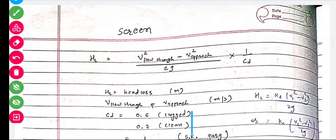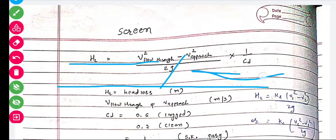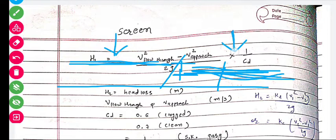This is the head loss formula. What is head loss? Here is the screen chamber - upstream of the screen the water depth will be higher, and downstream the water depth will be lower. There is some loss in head, or in simple words a decrease in depth. You can see some depth decrease in the downstream of the screen. This decrease in depth is called head loss. This is the equation for how we calculate it.